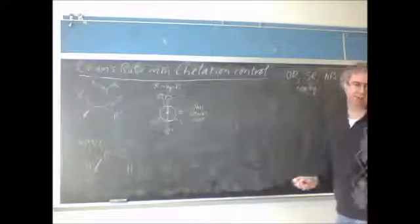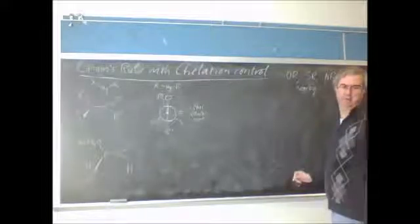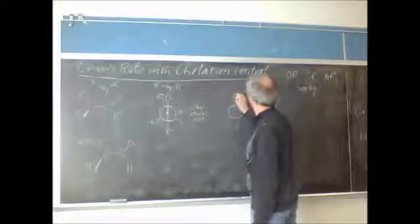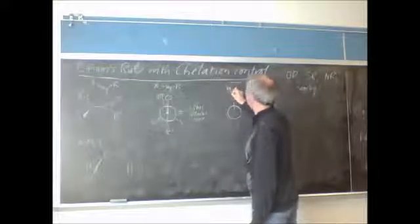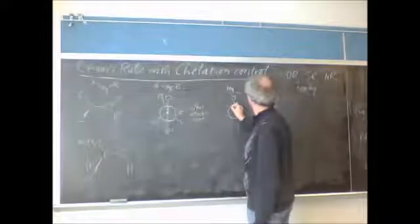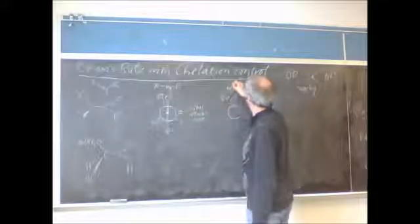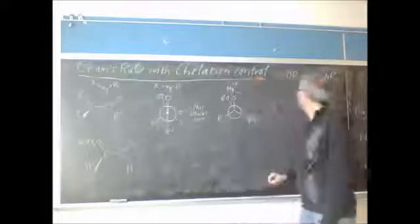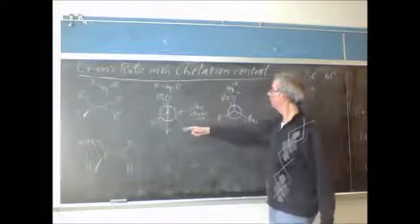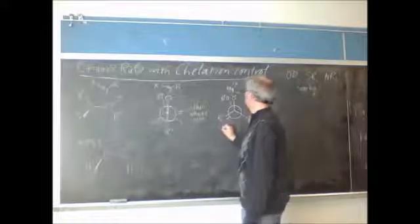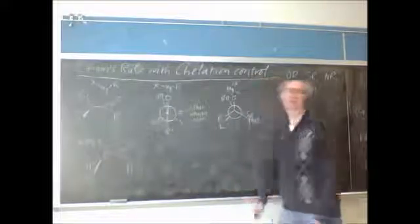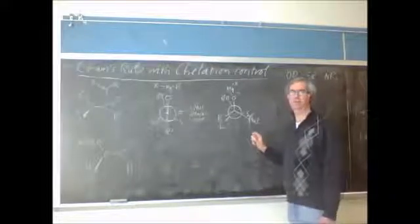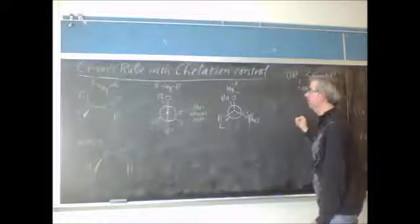So we would expect, then, to get a product something like this. The nucleophile comes in on this side and it's pushed the R1 group around. And our product, we would expect, if we draw the full structure of the product, we would expect to line them up.